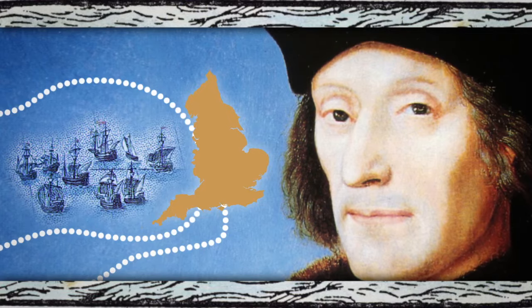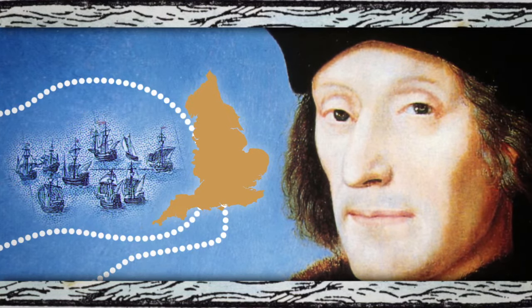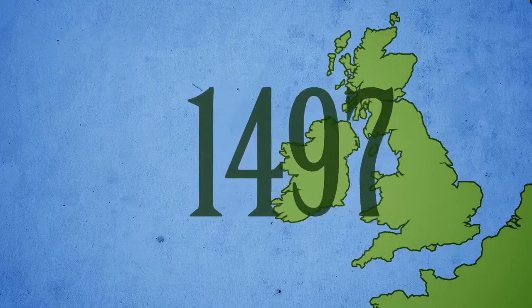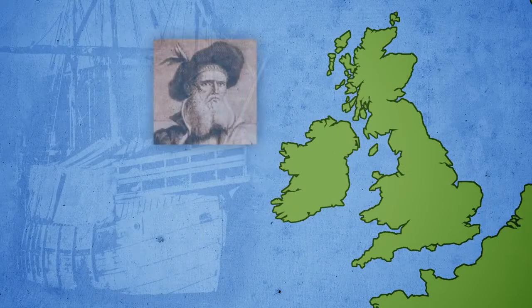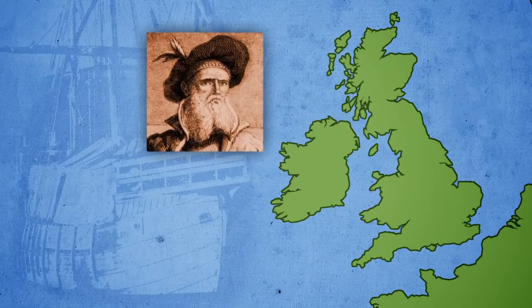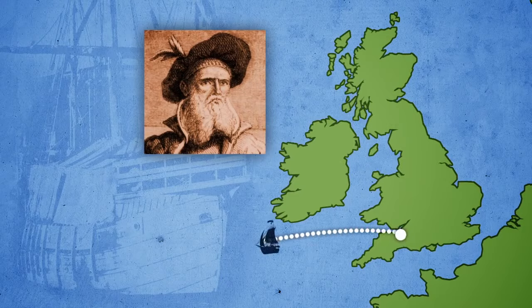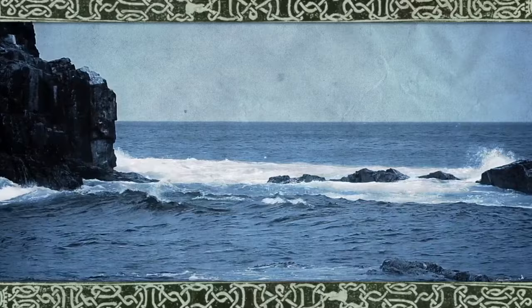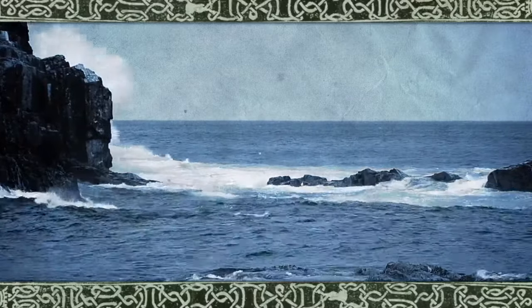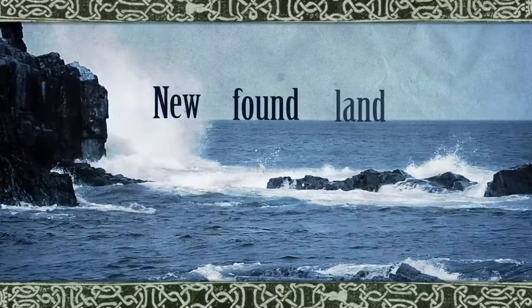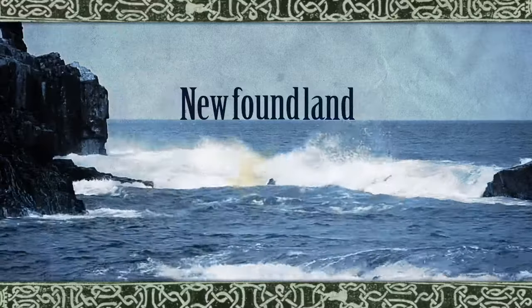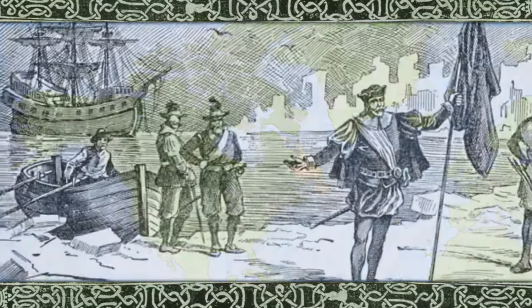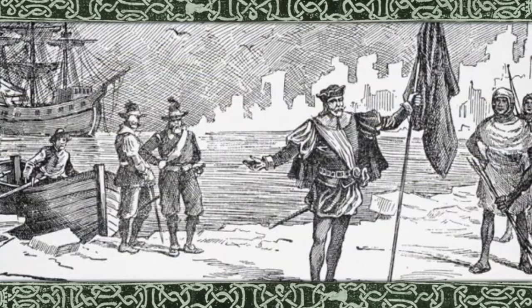He eagerly financed the voyage, hoping to make England a seafaring powerhouse, and specified that Cabot must give him a portion of any treasure he found. In May 1497, aboard the ship Matthew, Cabot and his crew of 18, including his son Sebastian, set sail from Bristol, England. Fifty days later, he spotted the coast of an uncharted land. Cabot named it Newfoundland, known today as Newfoundland in Canada. He was the first known European to reach the North American mainland.